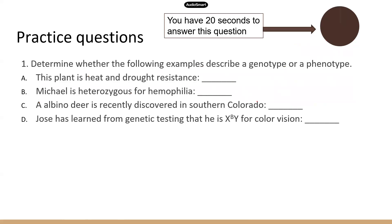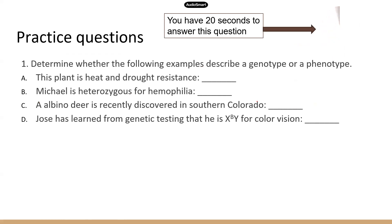Here's a practice question. How about option A: 'The plant is heat and drought resistant.' This is a description of what the plant is like — it has the characteristic of heat and drought resistance. So this is going to be phenotype.